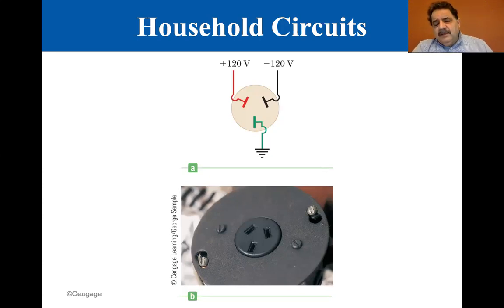And so the way the city supplies it is the green is ground, the black is the minus 120 and the red is plus 120 and you can see the potential difference between the minus 120 and the plus 120 is 240 volts. And so that's how you get the extra voltage needed for some of these appliances that need more voltage to run.